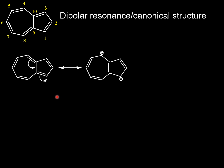If we try to delocalize the pi electrons on the C1 carbon of the 5-membered ring, there is a development of negative charge on C1 carbon. As a result, a carbon in the 7-membered ring becomes positively charged.